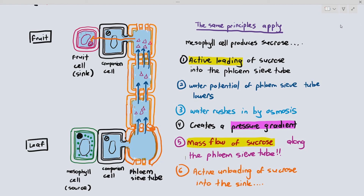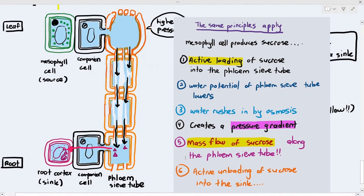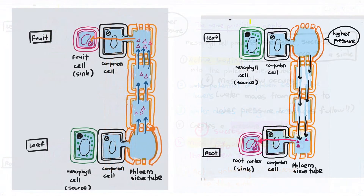So for one diagram the source is at the top and sink at the bottom; for the other, source is at the bottom and sink at the top. Students just need to know that movement of sucrose and amino acids in the phloem can occur in both directions — either top to bottom or bottom to top, not at the same time. The key terms are: active loading, lowering water potential of the phloem sieve tube, water rushing in by osmosis, pressure gradient, and mass flow. Active loading will be covered in detail in the final video for this chapter.